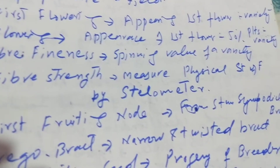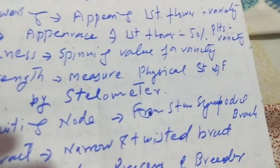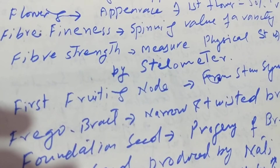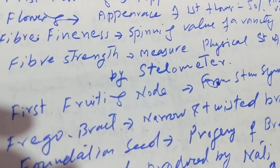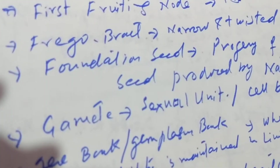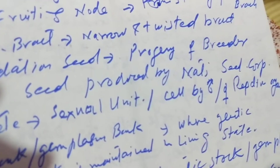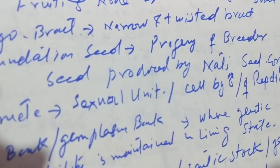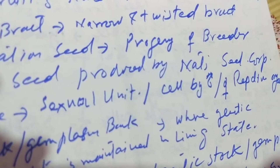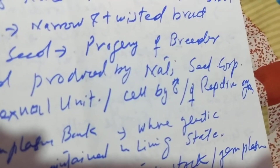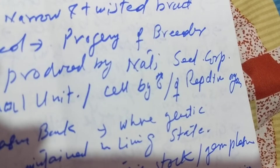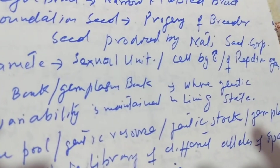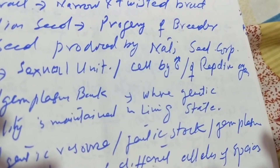Field resistance provides effective control of parasites in the field. Fiber fineness is the spinning value of a variety. Fiber strength is measured by the Stelometer. Foundation seed is the progeny of breeder seed produced by the national seed corporation.